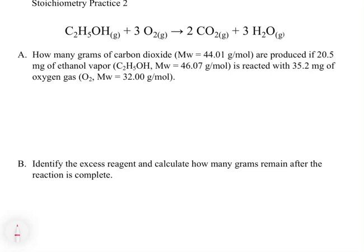This problem involves a combustion reaction, where we have ethanol reacting with oxygen to make carbon dioxide and water. We'll learn more about these reactions in chapter four, where we'll define the different types of reactions. But we learned about combustion reactions when we did elemental analysis. The problem asks: how many grams of carbon dioxide are produced if 20.5 milligrams of ethanol vapor is reacted with 35.2 milligrams of oxygen gas?